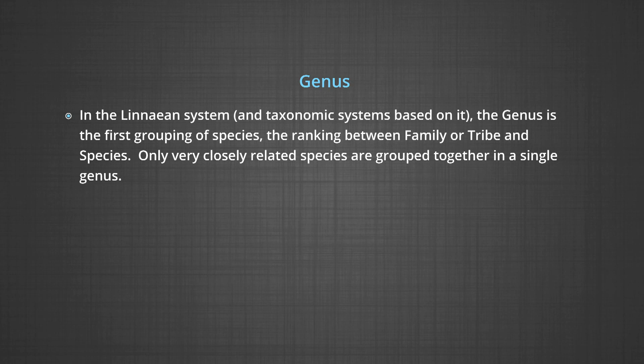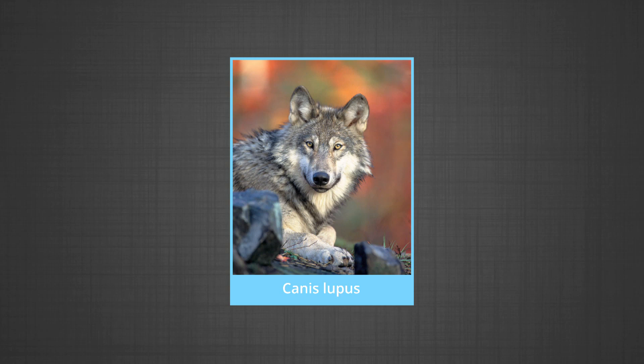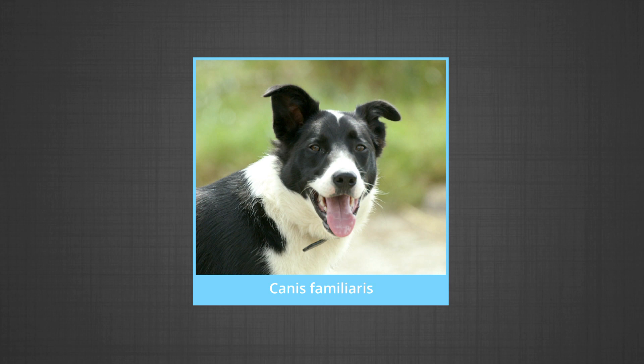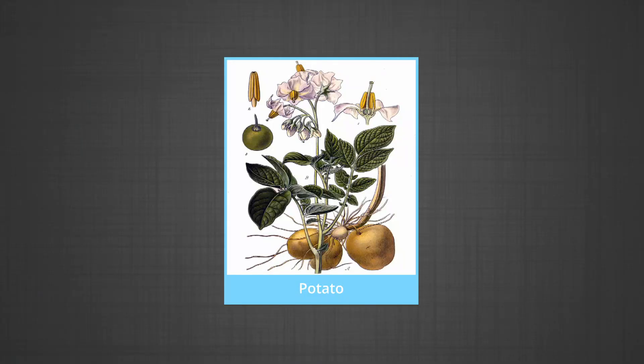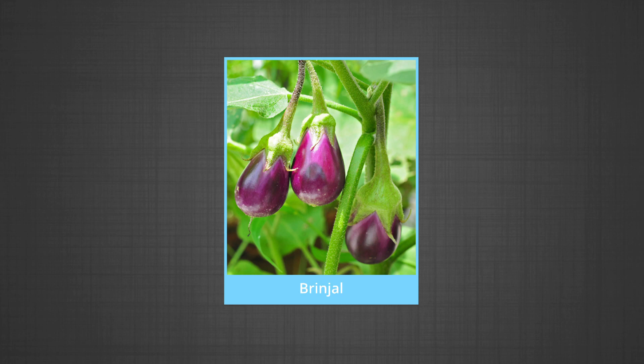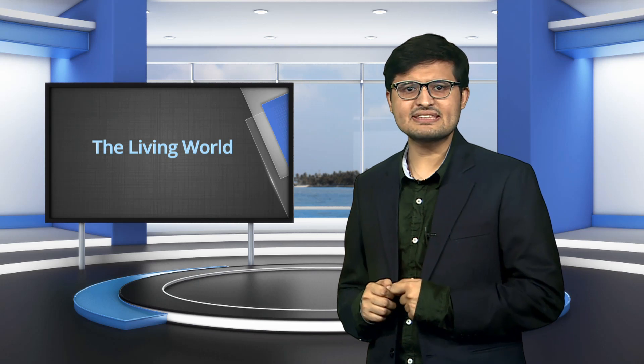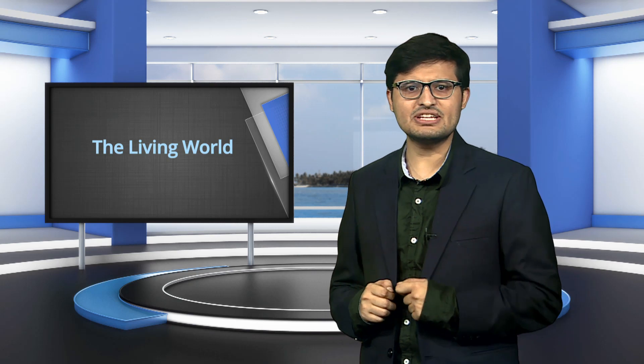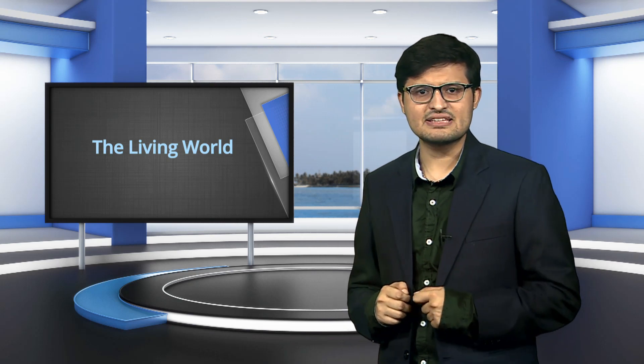Genus is the first grouping of species, ranking between family and species. Only very closely related species are grouped together in a single genus. The genus is like a surname, whereas the species is the first name. For example, Canis lupus (the wolf) is distinguished from Canis familiaris (the domesticated dog) — both belong to the same genus but are distinct species. Similarly, Homo erectus and Homo sapiens share a genus. Genera are aggregates of closely related species; for example, lion (Panthera leo), leopard (Panthera pardus) and tiger (Panthera tigris) all belong to genus Panthera, which differs from genus Felis which includes the cats.